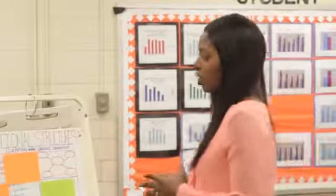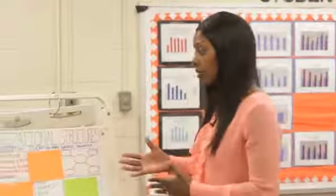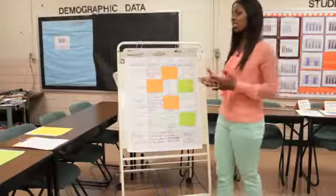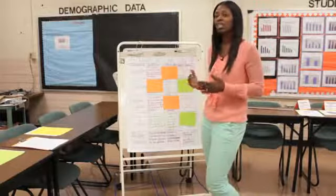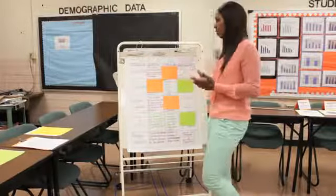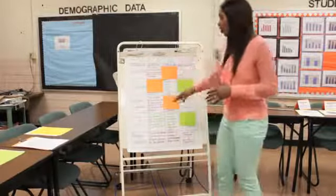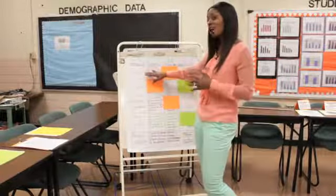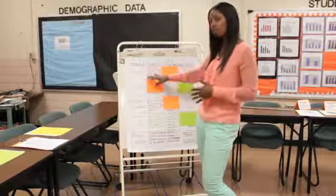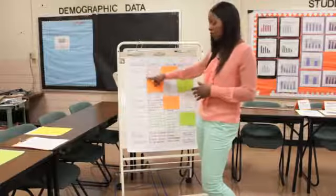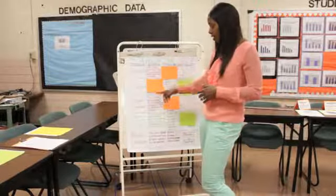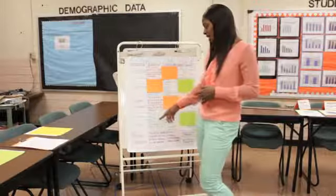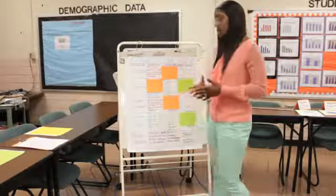The first thing you want to do is to create an organizational structure chart. An organizational structure, or text structure, is how information is presented and organized in writing. You want to highlight the five most common organizational structures in writing: descriptive, sequence, compare and contrast, cause and effect, and problem and solution.